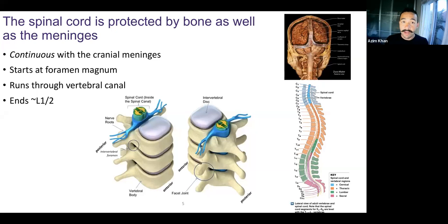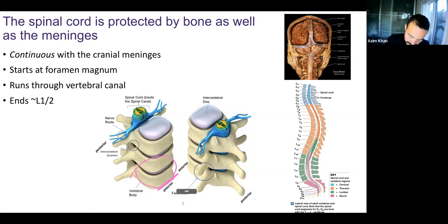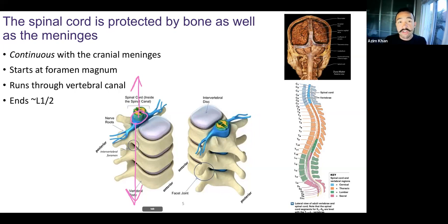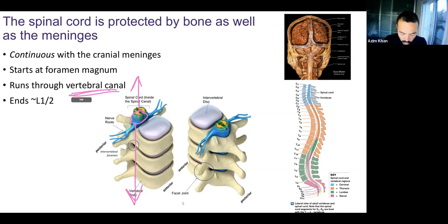Tying this in with what we've learned about the skeletal system, the spinal cord is protected by vertebrae. The spinous process points posteriorly, and the spinal cord runs vertically in the vertebral canal. It's protected by the vertebral canal — the vertebral arch forms that canal. Intervertebral refers to the horizontal direction, which is for spinal nerves, while the vertebral canal runs vertically protecting the spinal cord.